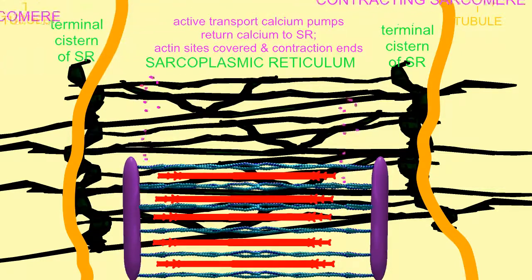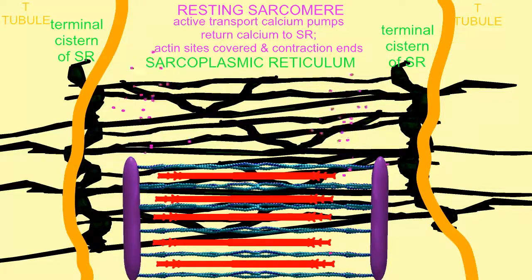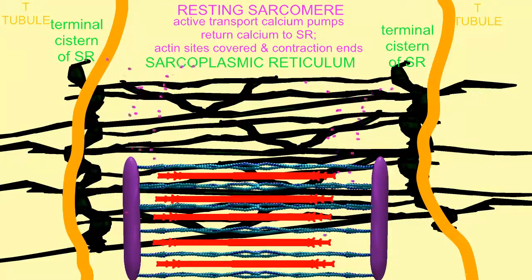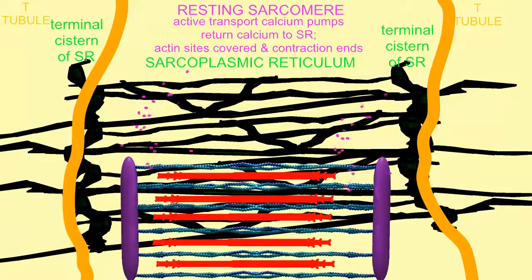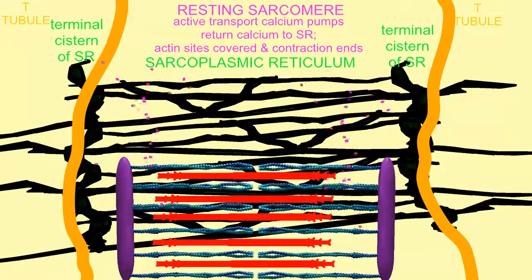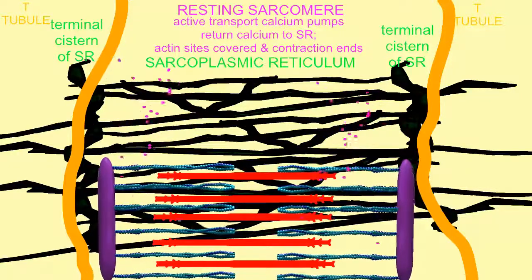The sarcoplasmic reticulum also possesses active transport pumps, which begin to pump calcium ions back into the sarcoplasmic reticulum after their release in an action potential. This will remove the calcium ions from the sarcoplasm.